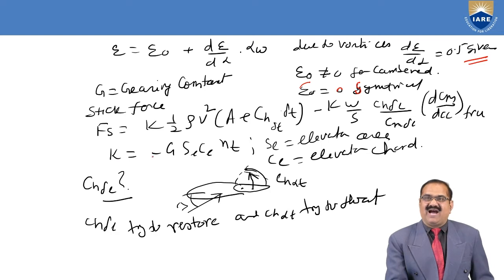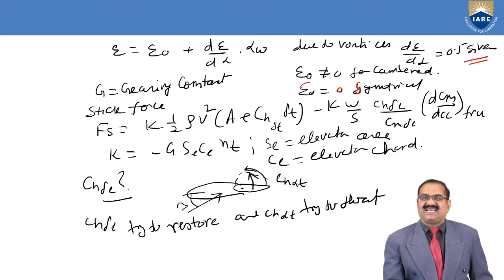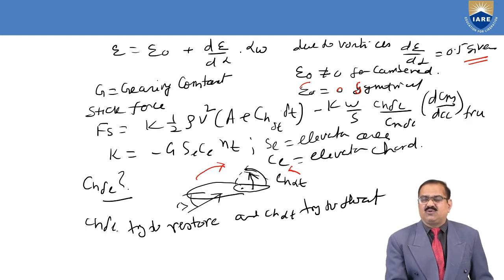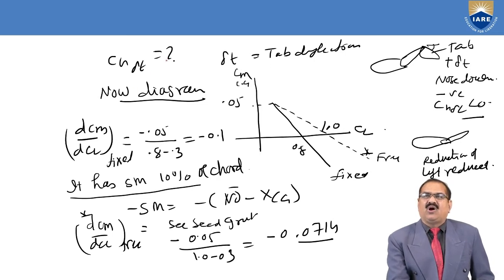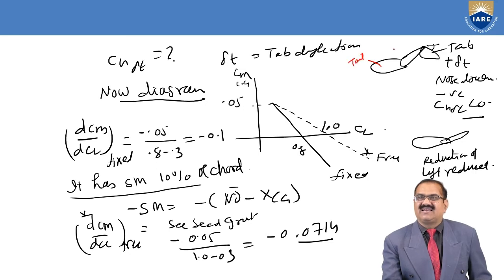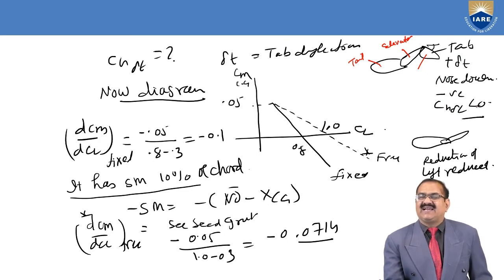Here Se is elevator area and ce is elevator chord. CH_delta_e tries to restore while CH_delta_t tries to float. In the diagram, this is the tail, this is the elevator, and this is the tab. If the tab goes down it is a positive tab deflection; nose down is negative. CH_delta_e is less than 0.